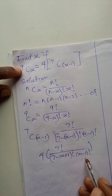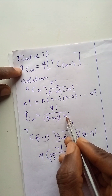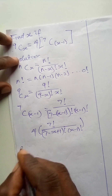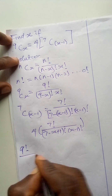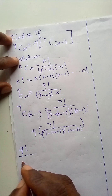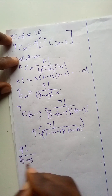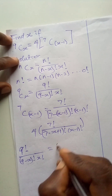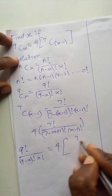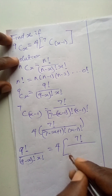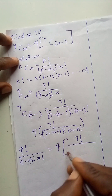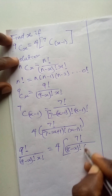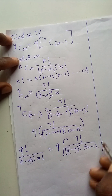We can now equate both parts of the equation. So it becomes 9 factorial over 9 minus x factorial times x factorial, equal to 4 bracket 7 factorial over 7 plus 1 is 8, so we have 8 minus x factorial times x minus 1 factorial.